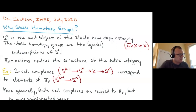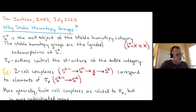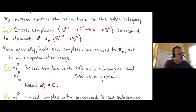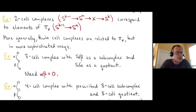For a very concrete example, consider the class of two-cell complexes: spectra obtained by taking a sphere spectrum, mapping it to another sphere spectrum, and taking the cofiber. These two-cell complexes are in correspondence with elements of pi_star. So if you want to classify two-cell complexes, you have to compute the stable homotopy groups. More generally, finite-cell complexes are related to the structure of pi_star, but in a more sophisticated way.